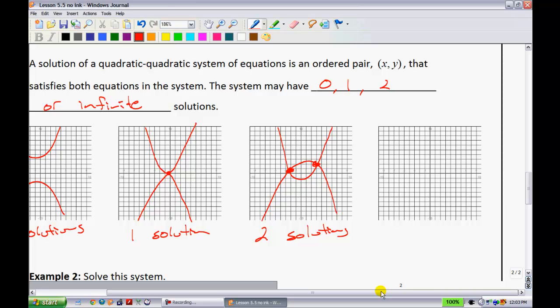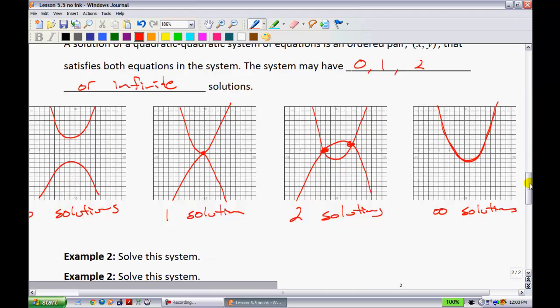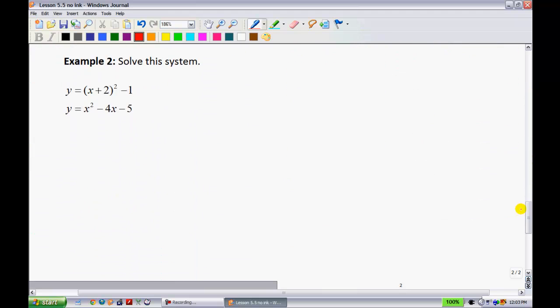Now, the next one's a little strange. The next one does have infinite solutions, and that's basically when both of the graphs are the same. Let's say we have one quadratic like so, and then I have another quadratic that's just right underneath it. Those cross at an infinite amount of times because they're really just the same graph, so we would say it has infinite solutions. Let's take an example of one of these, where we have two quadratics, and solve these.